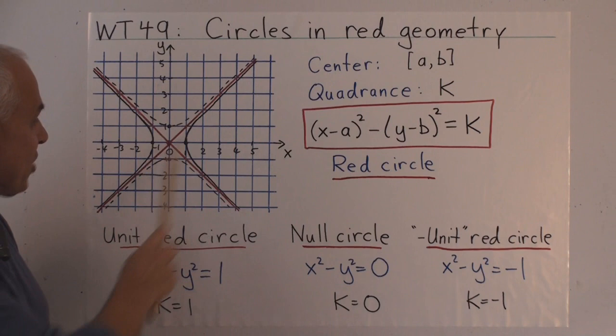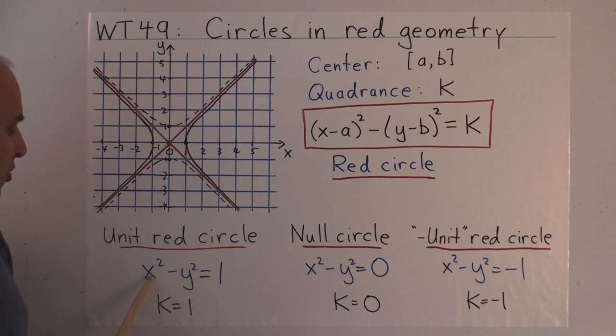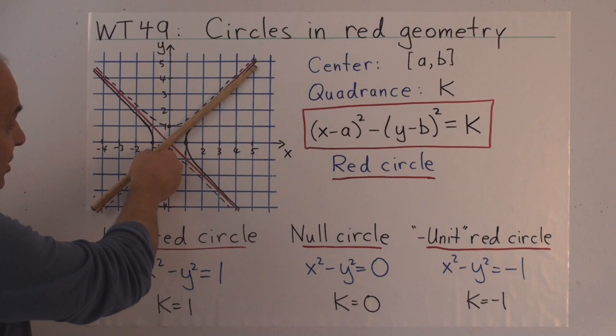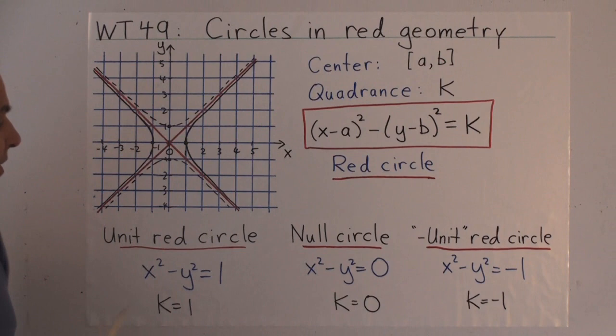So over here, we start with, in black, this is the red circle with equation x² - y² = 1. The quadrance is 1, and that's what we usually consider to be a hyperbola, a rectangular hyperbola, whose asymptotes are these lines of slope 1, which I've drawn here in red.